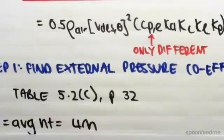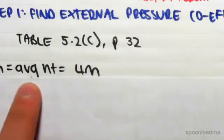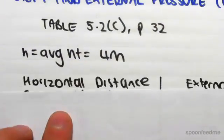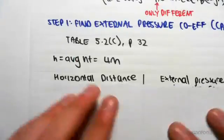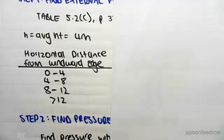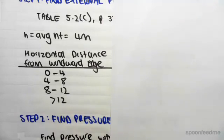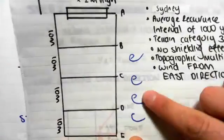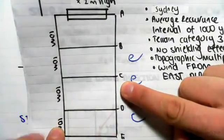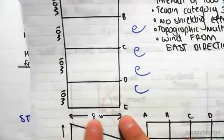We're going to draw our own little table. From the previous videos, our average height h is 4 meters, so we'll substitute that into the left-hand side. Looking at our building from the original video, the windward wall and leeward wall are identified, and the sidewalls are the walls on either side.